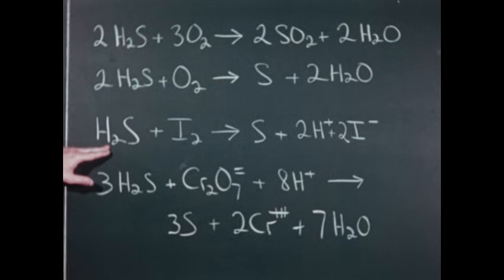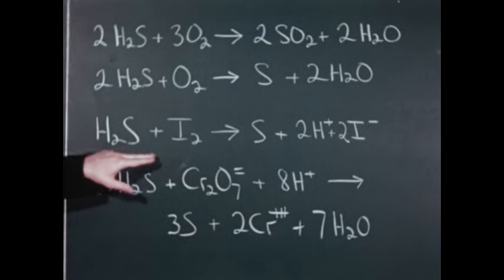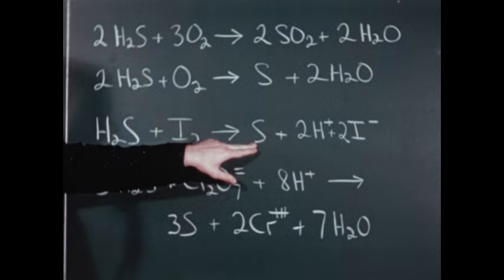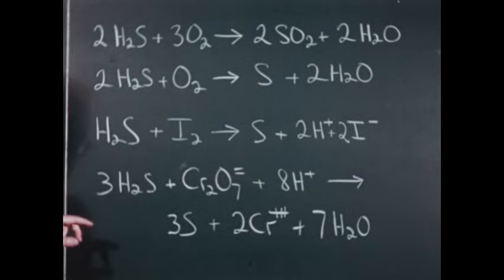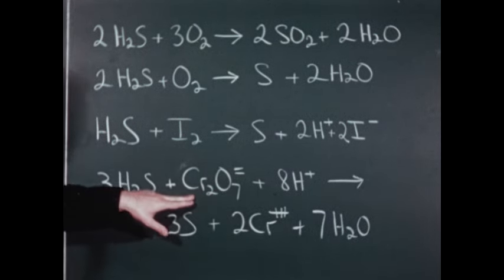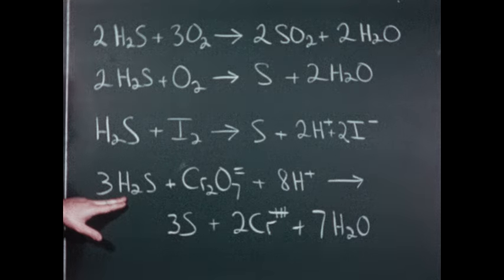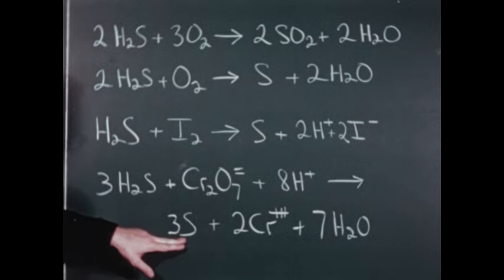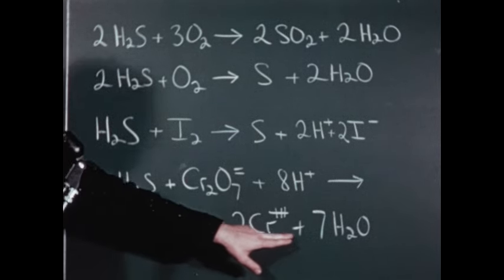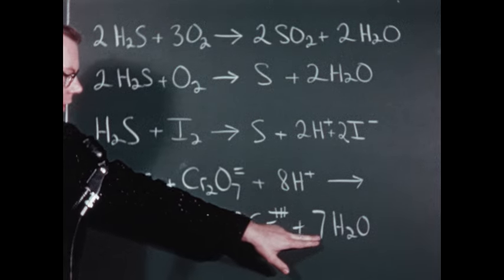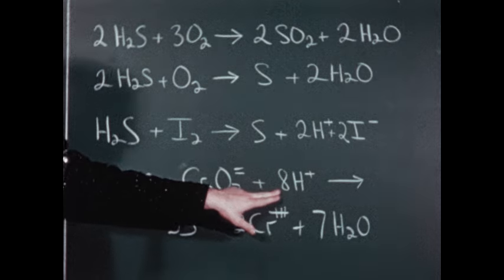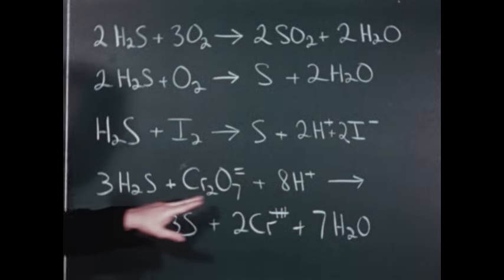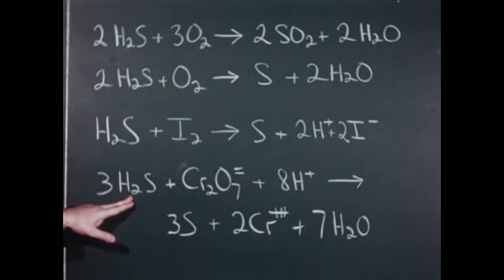We saw that hydrogen sulfide water reacts with iodine to produce sulfur and solutions containing hydrogen iodide. And then we saw that acidified solutions of a dichromate react with hydrogen sulfide water to produce sulfur, the green chromic ion, and water. There are 14 hydrogens present in the seven molecules of water: eight came from the sulfuric acid which we added and the other six from the hydrogen sulfide.